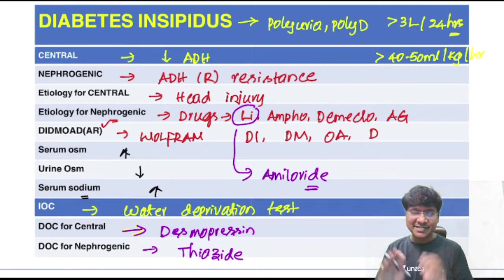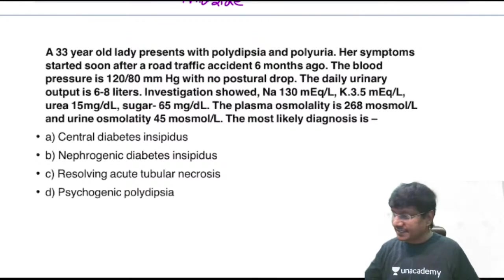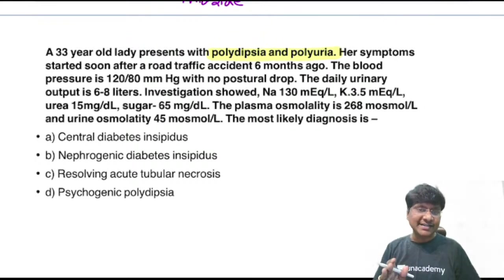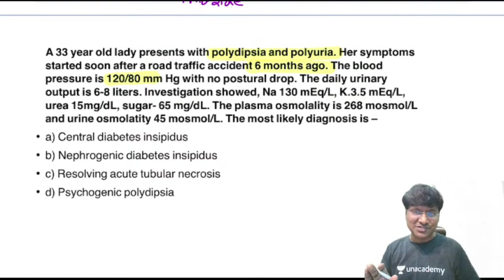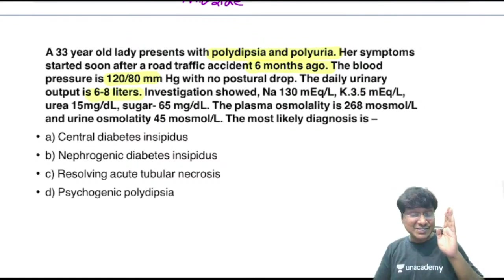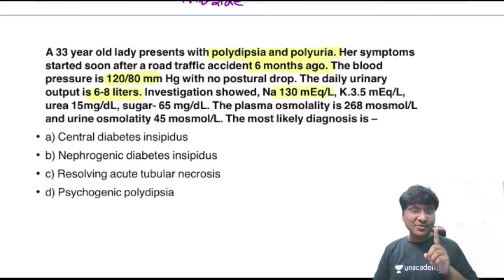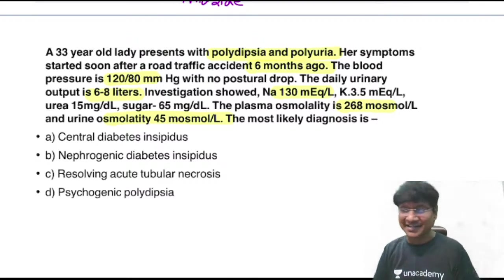Now answer this question: a 33-year-old lady presented with polydipsia and polyuria. Symptoms started after a road traffic accident 6 months ago. BP is 120/80 with no postural drop. Daily urine output is 6 to 8 liters. Investigations show sodium 130, potassium 3.5, urea 15, sugar 65, plasma osmolality 268, urine osmolality 45.